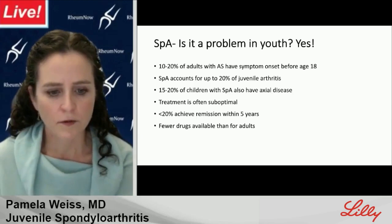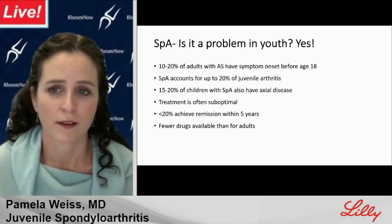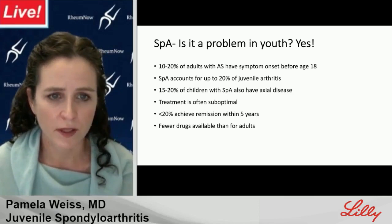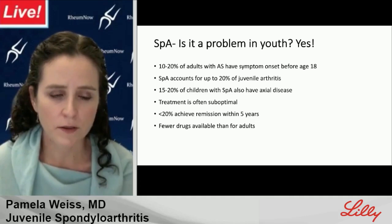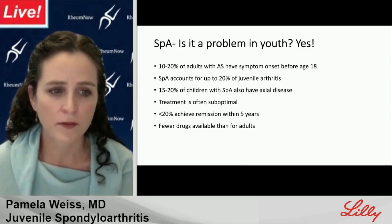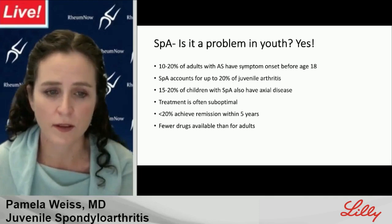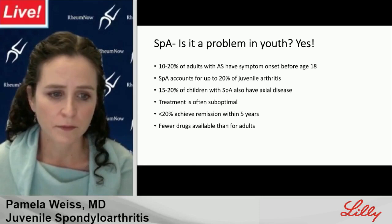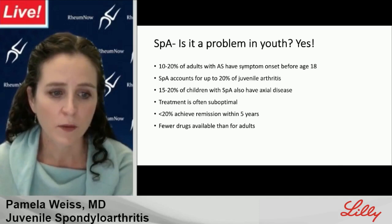Is juvenile onset SPA even a problem in youth? The answer is a resounding yes. We know that 10 to 20% of adults with ankylosing spondylitis have symptom onset before age 18. Spondyloarthritis accounts for up to 20% of juvenile arthritis. 15 to 20% of children with spondyloarthritis have axial disease, most often sacroiliitis. Treatment is often suboptimal — less than 20% achieve remission within five years, and we have fewer drugs available for juvenile onset disease.